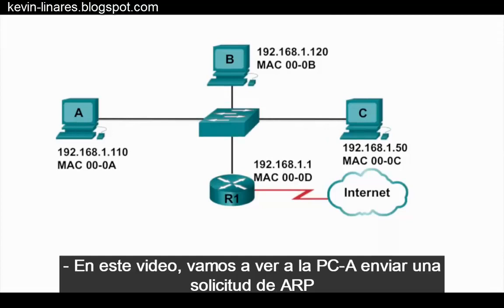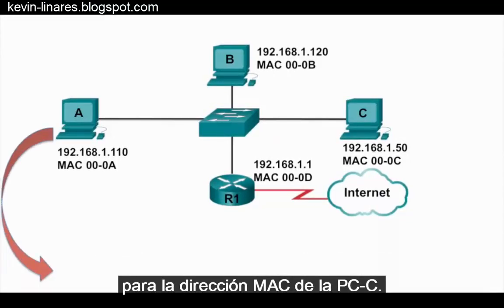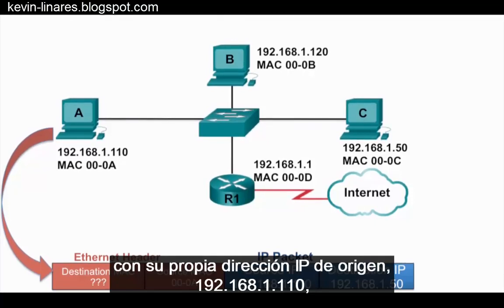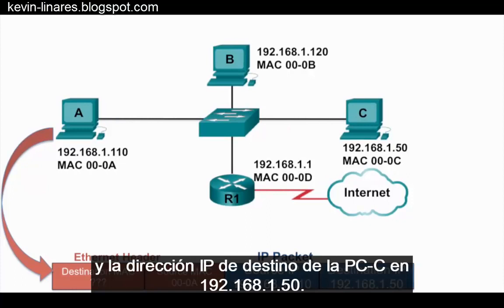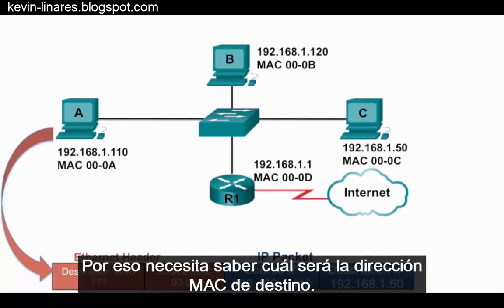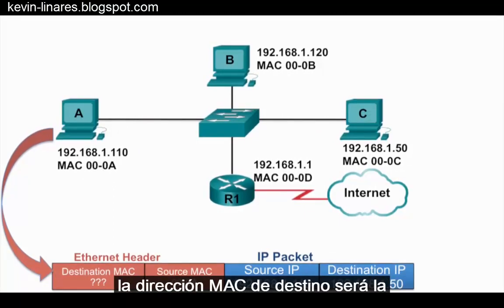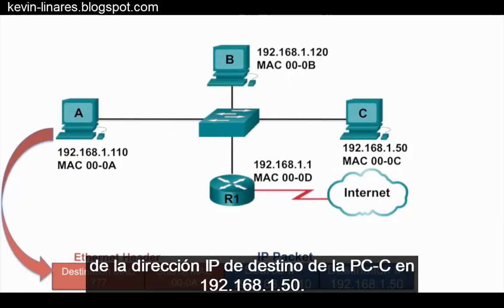In this video we're going to see PCA send an ARP request for the MAC address of PCC. PCA has an IP packet with the source IP address of 192.168.1.10 and the destination IP address of PCC at 192.168.1.50. So it needs to know what the destination MAC address will be. Because the source and destination IP addresses are on the same network, the destination MAC address will be that of PCC at 192.168.1.50.